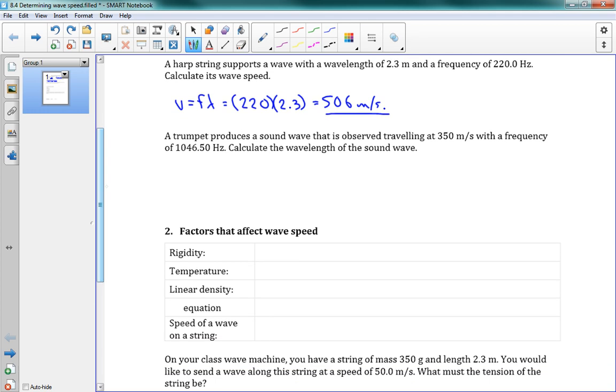The next one says a trumpet produces a sound wave that is observed traveling at 350 meters per second, with a frequency of 1046.5 hertz. Calculate the wavelength of the sound wave. All right, well, no problem. We have v equals f lambda. We have the frequency and we have the speed. So we want to find what lambda is, the wavelength. We rearrange this guy. Lambda is equal to v over f.